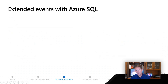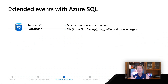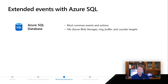What about extended events? For Azure SQL Database, most of the common events and actions you're used to are going to be available. You can trace SQL queries and do common actions — adding orthogonal information to the event itself like SQL text. From a target point of view, you're going to get file targets just like in SQL Server, except because you don't have access to the file system, you'll use Azure Blob Storage to store your extended event file targets. You also get ring buffer and counter targets in addition to file targets.